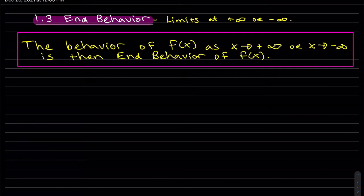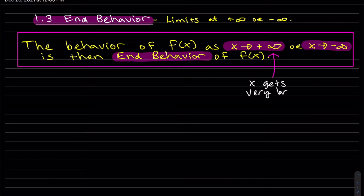This is section 1.3 where we talk about end behavior — the limits at plus or minus infinity. The behavior of f(x) as x approaches positive infinity or negative infinity is known as the end behavior of the function. Basically, as x gets very large or very small, what are the values of f(x) at the ends of the graph?